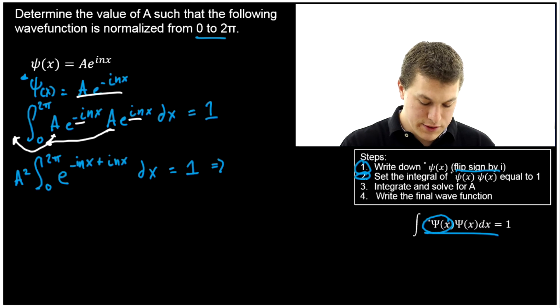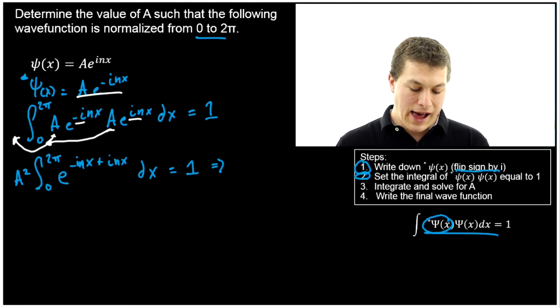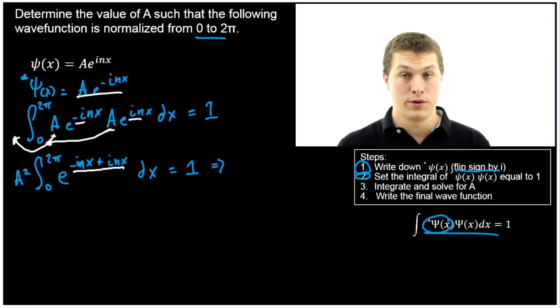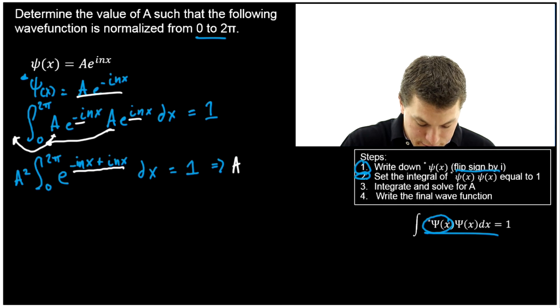Alright. Now what's our next equation? Well when I add -inx to +inx, that just gives me zero, just like if I did five minus five, or six minus six, or negative x plus x. That's going to give me zero. So I'm going to get A².